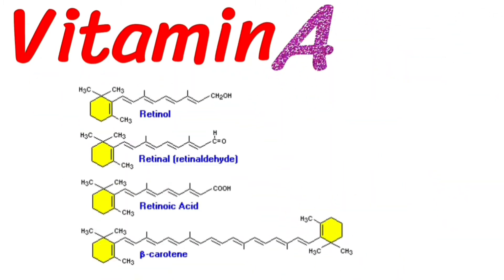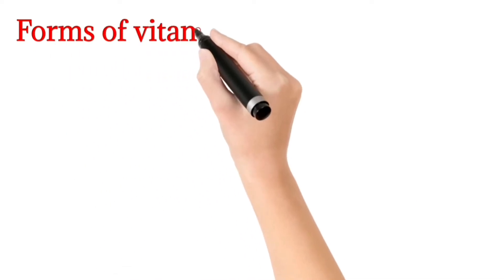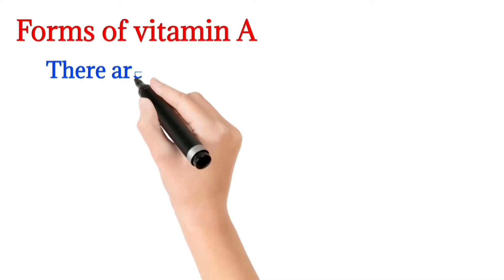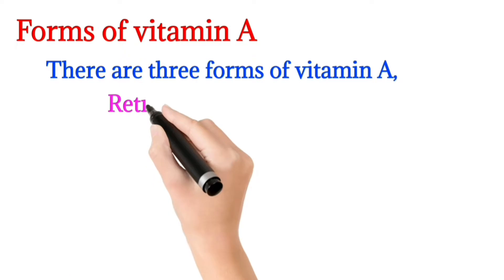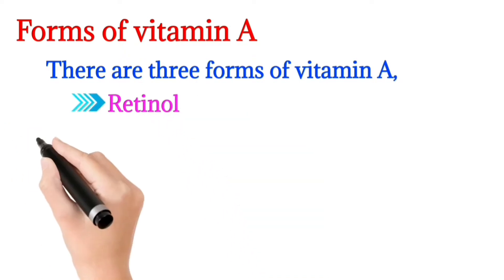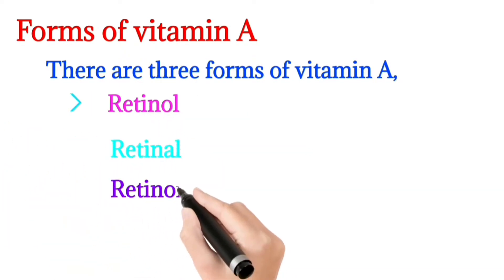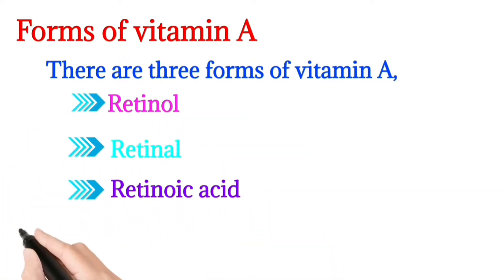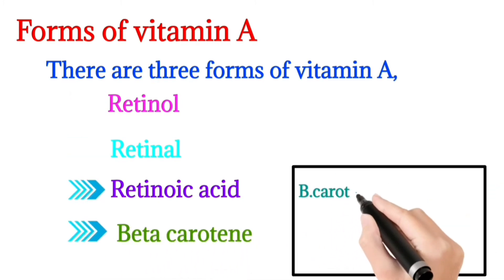Bismillahirrahmanirrahim. Today our topic is Vitamin A. Vitamin A is a fat-soluble vitamin. There are three forms of Vitamin A: retinol, retinal, and retinoic acid. Beta-carotene is a pro-vitamin which is derived from plants.